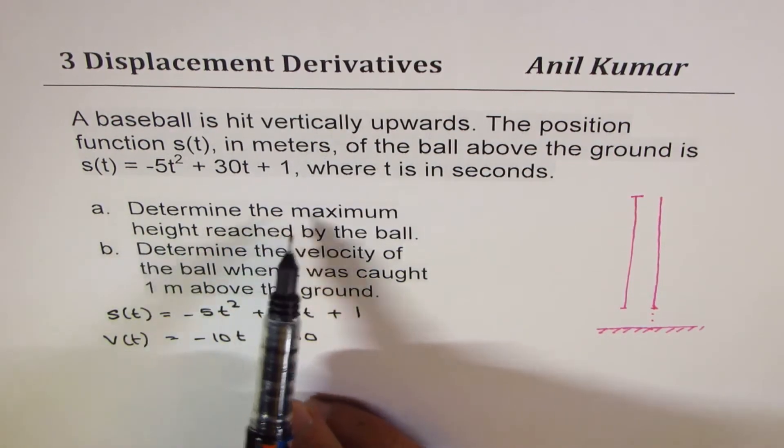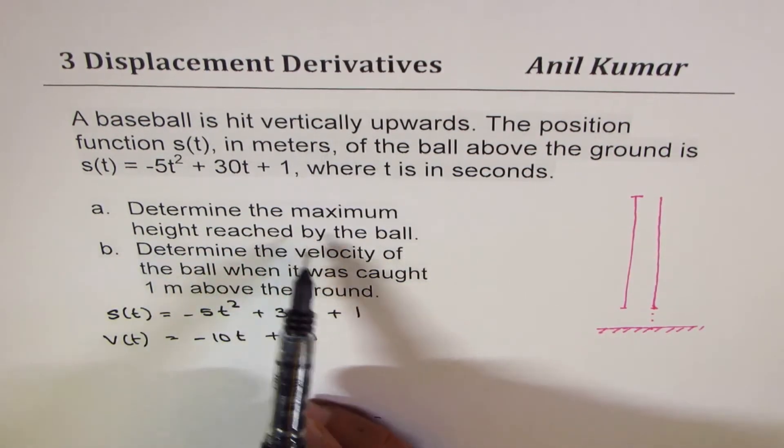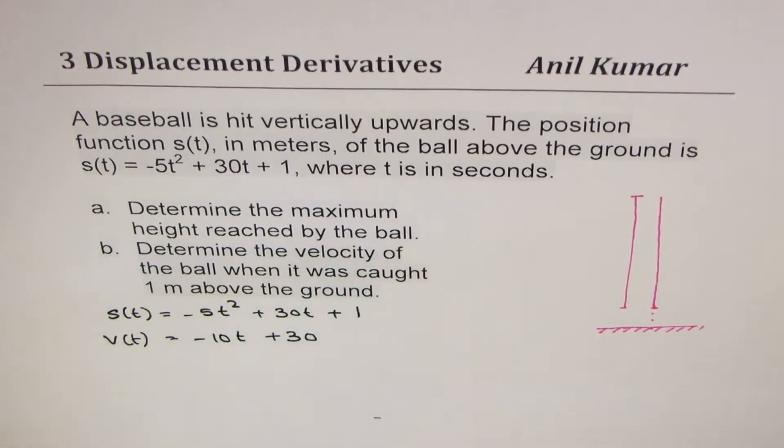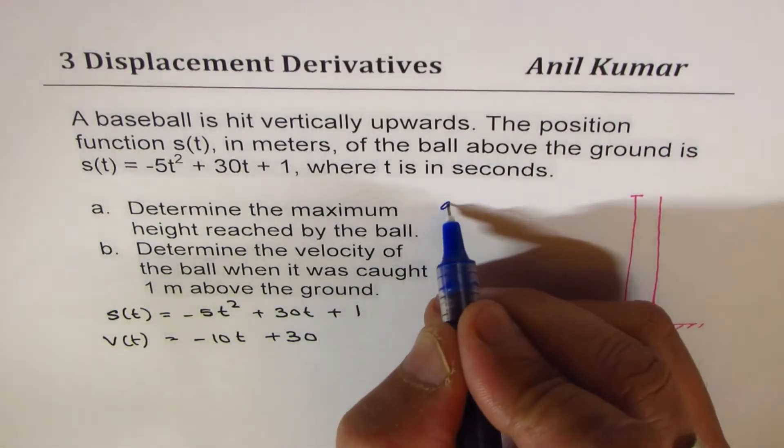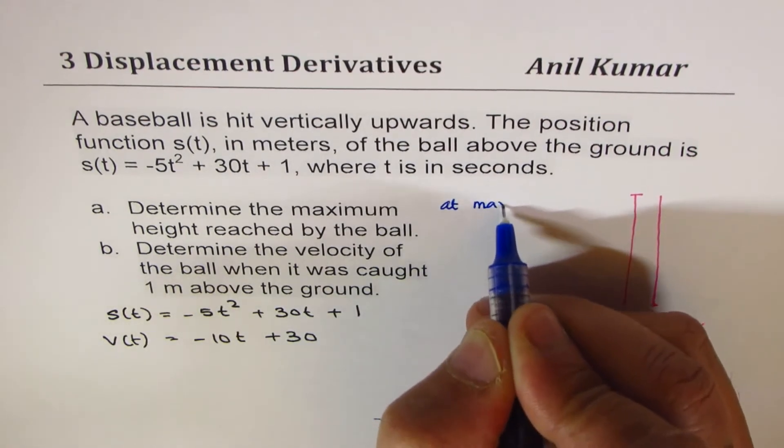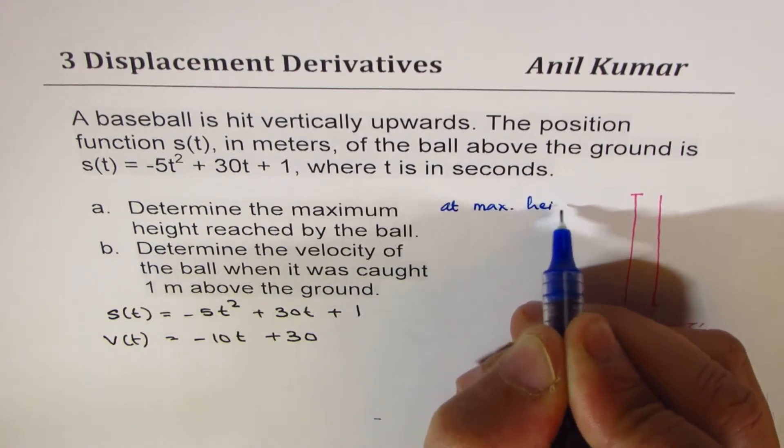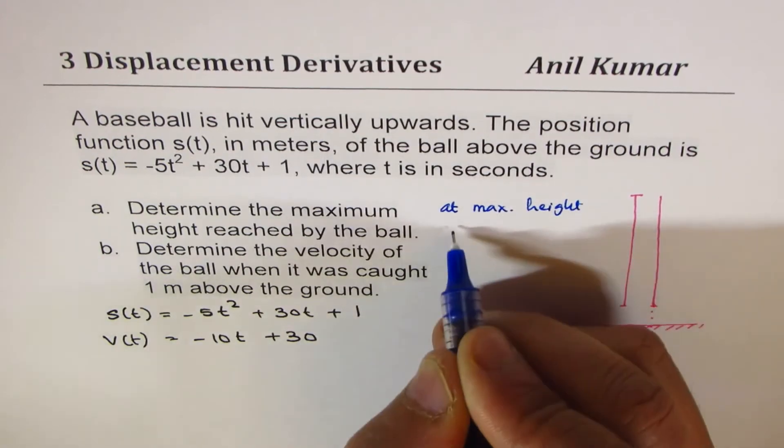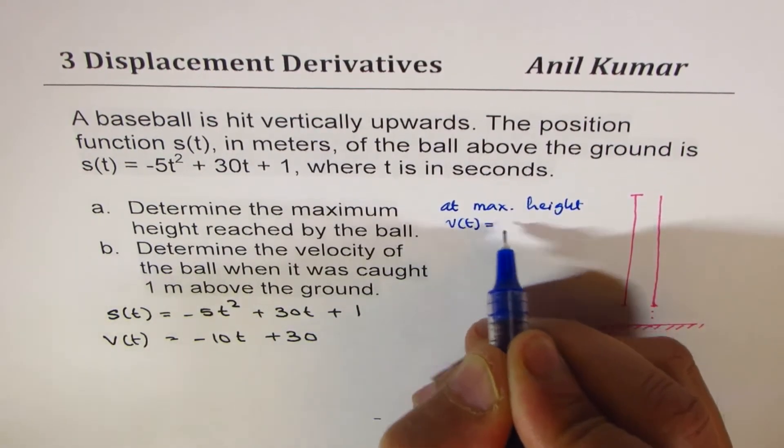Part A is determine the maximum height reached by the ball. So at the maximum height, velocity will be 0. At maximum height, it's a turning point, so velocity is going to be 0.